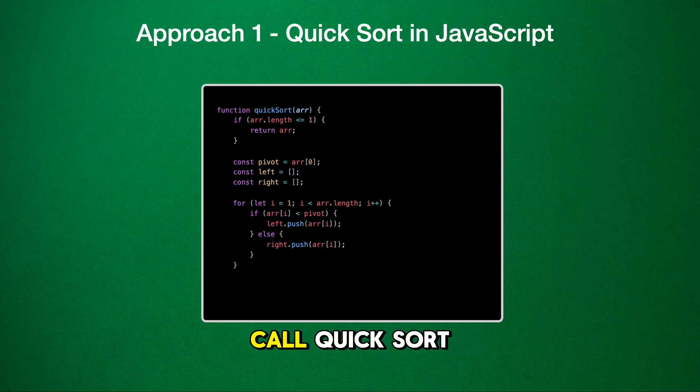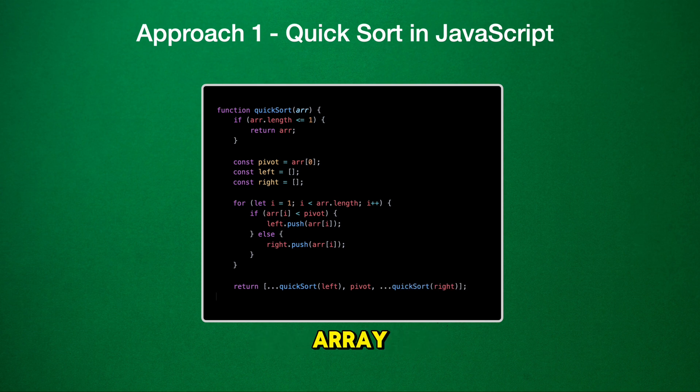Finally, we recursively call QuickSort on both the left and right arrays. The sorted left array, the pivot, and the sorted right array are concatenated together to form the sorted array. This becomes the return value of our QuickSort function call.